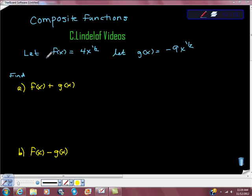So we start off with the two functions that they give us. Let f of x equal 4x to the 1 half power, and let g of x equal negative 9x to the 1 half power. They ask us to add the two functions together, so what is f of x plus g of x?